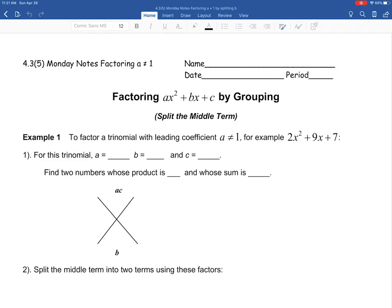Here we are at our 4.3 number 5 set of notes looking at Example 1. We're talking about how to factor where our leading coefficient is not 1. When we look at number 1, we see that we have this trinomial 2x² + 9x + 7. We see that the a value is 2, our b value is 9, and our c value is 7. So we're going to fill those values in: a is 2, b is 9, and c is 7.